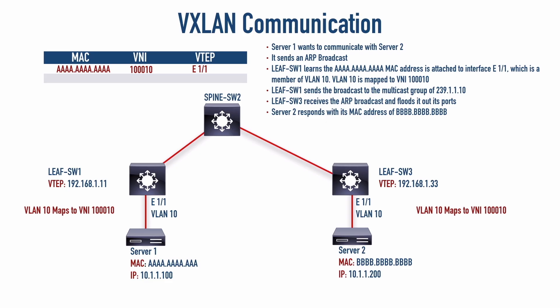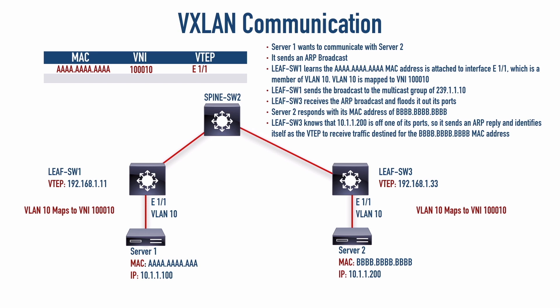Leaf switch three tells leaf switch one: if you want to reach the all-B's MAC address, come to me at VTEP IP 192.168.1.33. Leaf switch one makes an entry in its table stating that the all-B's MAC address in VNI 10010 is reachable via VTEP 192.168.1.33. It then sends the ARP reply — the all-B's MAC address — down to server one. Now when server one wants to communicate with server two, leaf switch one forms a VTEP tunnel with leaf switch three and sends the traffic across.